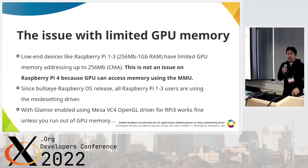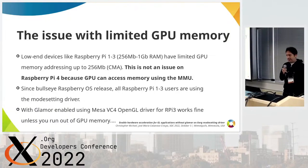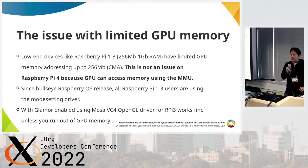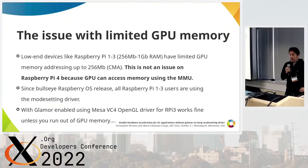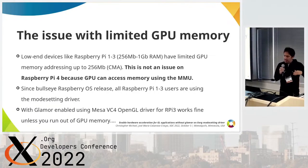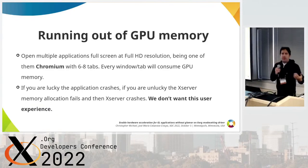This is not an issue on the Raspberry Pi 4 because its chipset includes an MMU so it can access the whole memory. Since the release of Raspberry Pi OS based on Debian last December, the Raspberry Pi 1, 2, and 3 are using the modesetting driver. But when glamour is enabled, everything was fine until the moment we run out of GPU memory, at which point we can reproduce the issue.